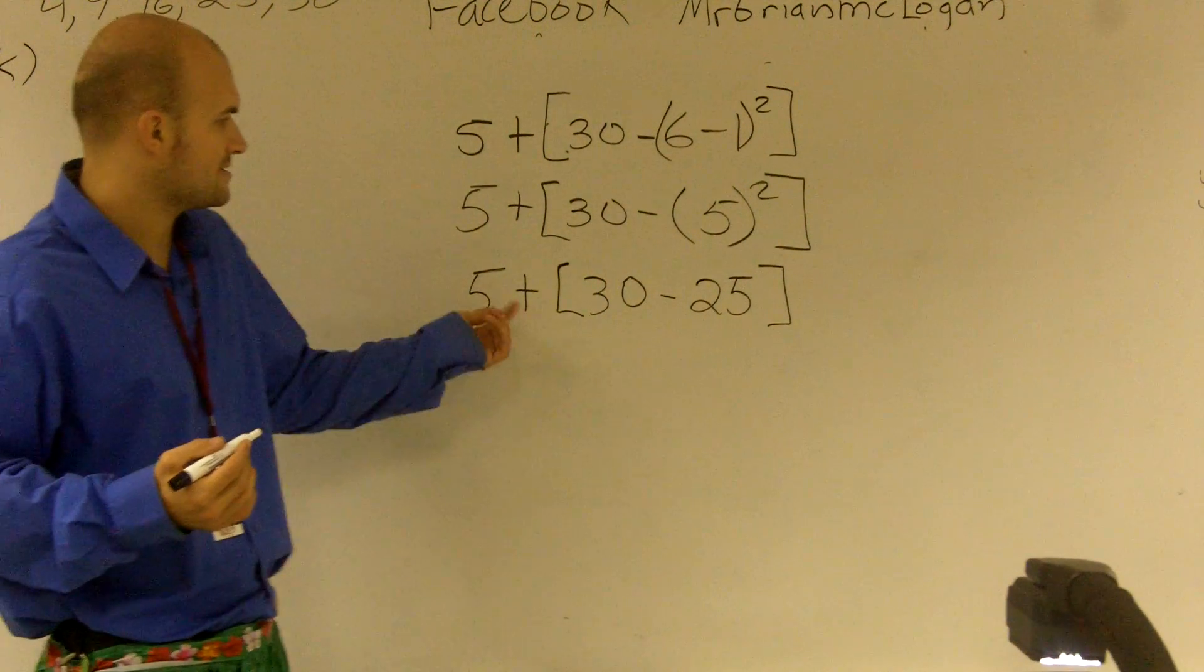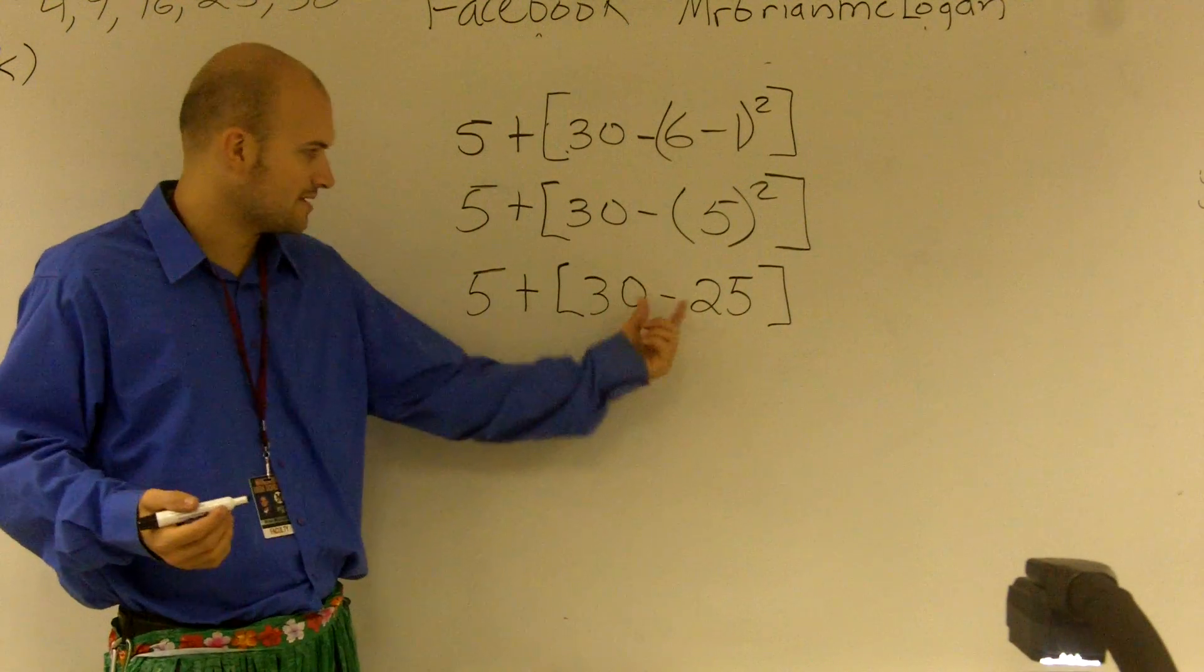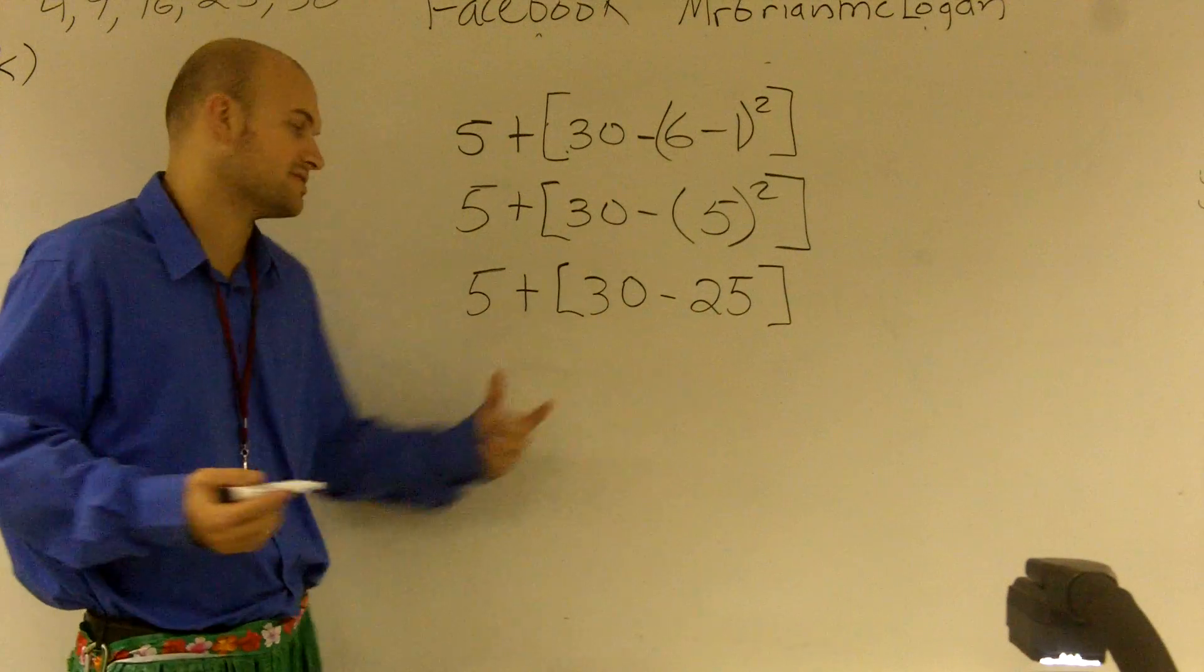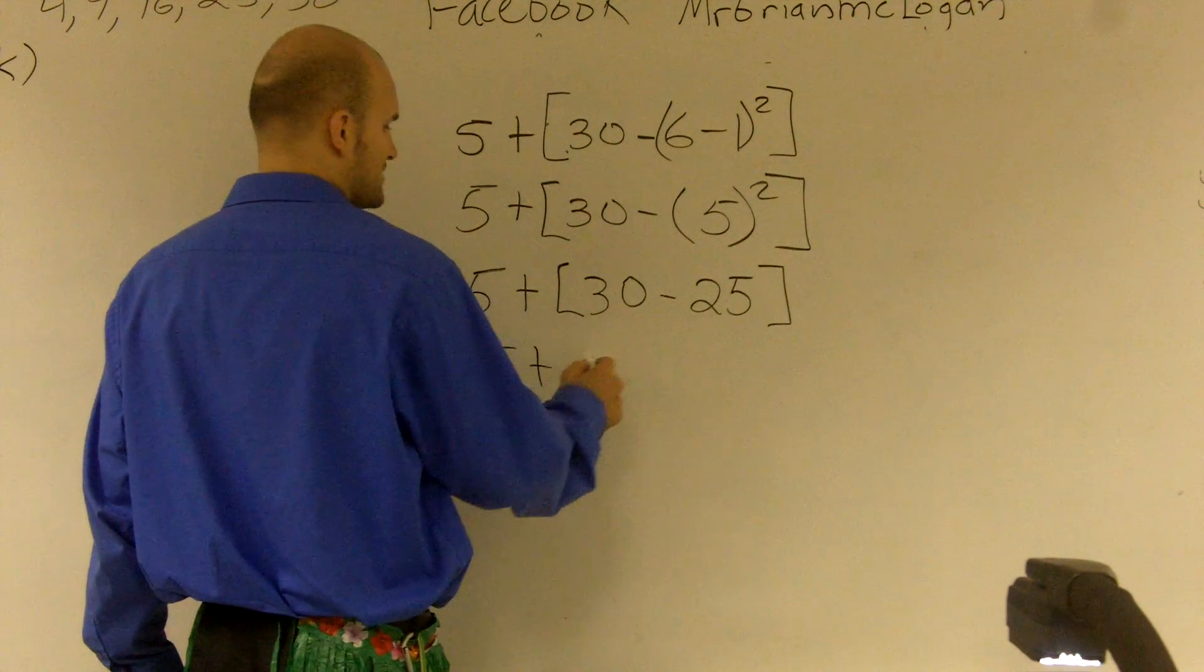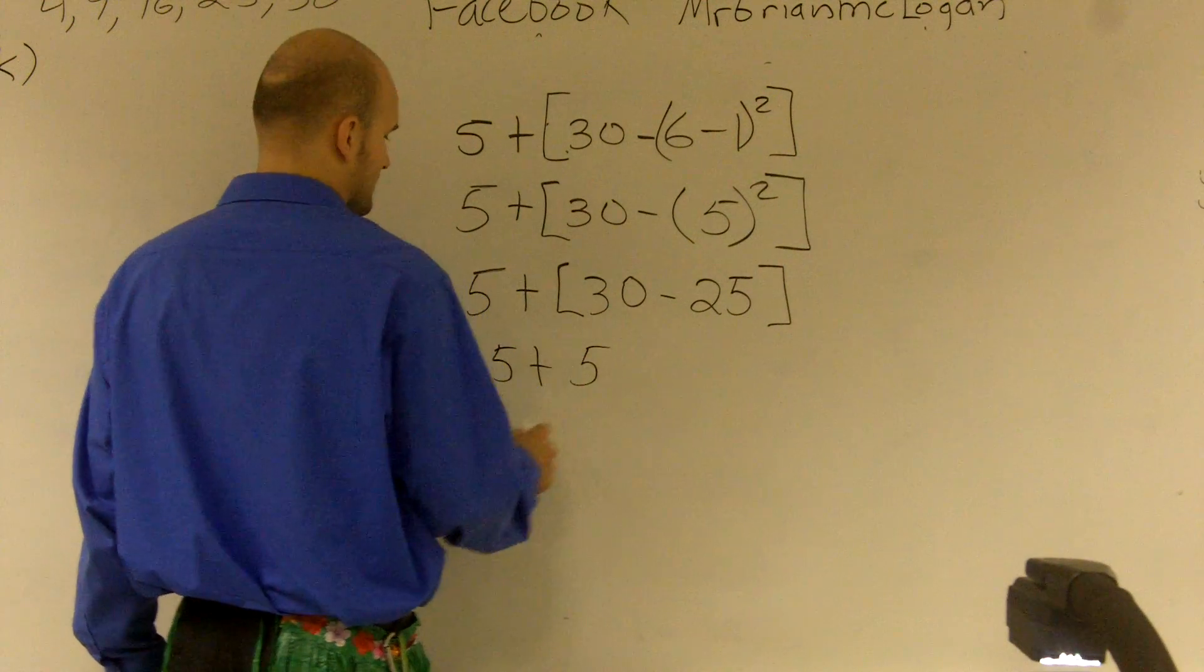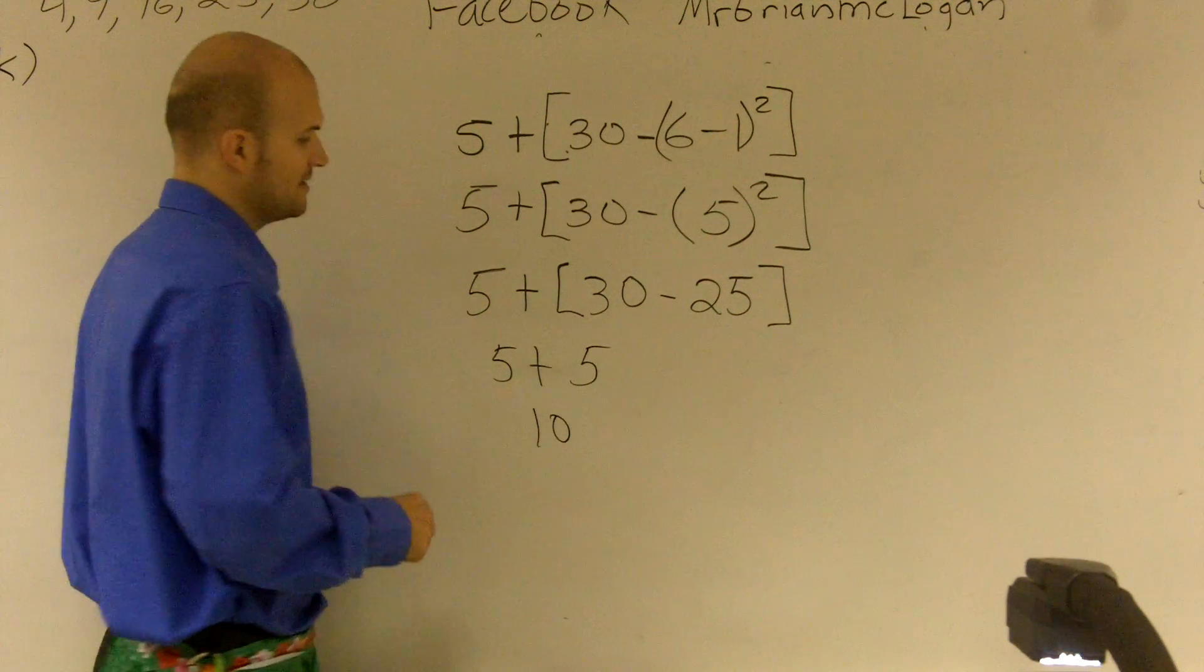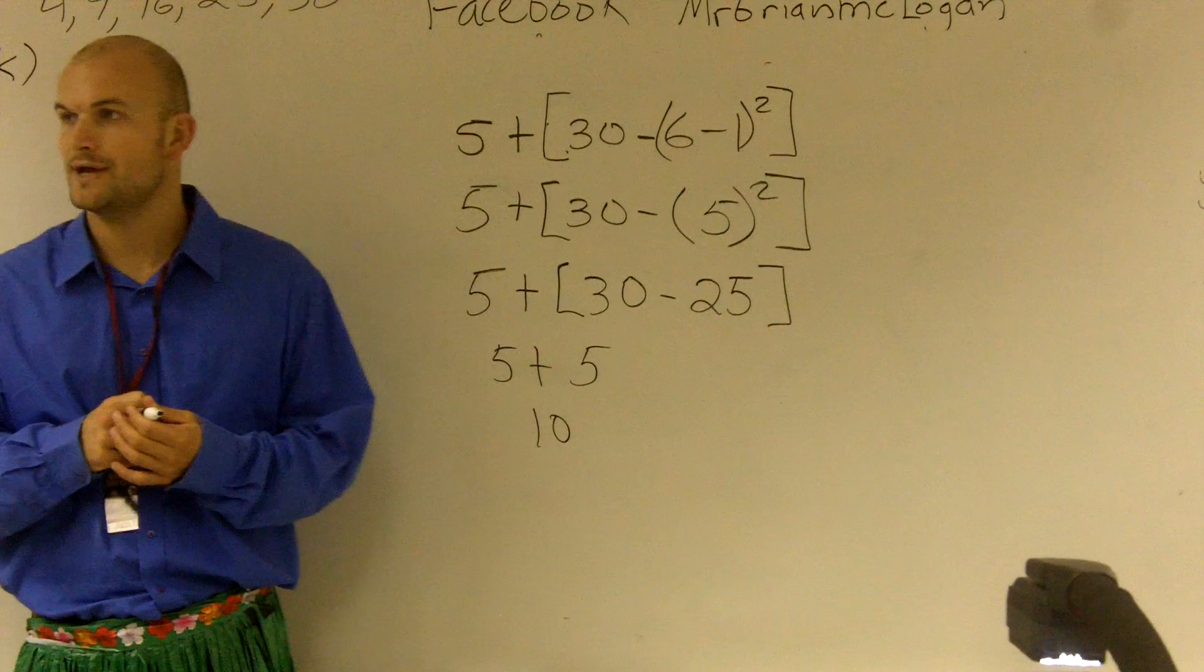Now all I have is addition and subtraction. I'm going to finish off the parentheses first. 30 minus 25 equals 5, so then 5 plus 5. My final answer is 10.